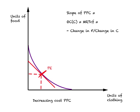Based on this production equilibrium for the decreasing cost PPC, we can determine how many units of clothing and food will be produced. The quantity of clothing produced by this country will be OC1, and the quantity of food produced will be OF1. At this production equilibrium point — the point of tangency — the slope of the PPC equals the slope of the budget line, and we know precisely how much clothing and food will be produced.